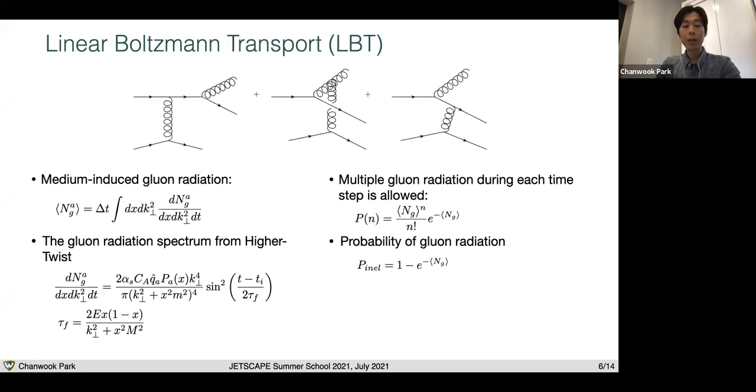For the inelastic rate, we evaluate these kinds of diagrams where a jet shower parton scatters off a soft parton in the QGP and radiates a gluon. In this diagram, the scattering point is somewhat ambiguous within the formation time of this gluon radiation. From these diagrams, one can compute the number of medium-induced gluon radiation. This is given by delta T multiplied by integrated gluon radiation spectrum.